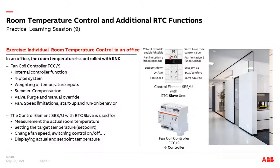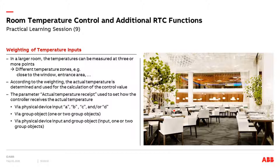We have built inside the room a fan coil unit which works in a four-pipe system, and we want to do these different additional functions: weighting of the room temperature, summer compensation, the valve purge, and the limitations. Regarding weighting of the temperature input — for example, we have different zones in an open-plan office or in a room. We can measure the temperature at different points and then weight this temperature for calculation of the set point. On the fan coil controller we can use the temperature which comes from the room temperature sensor via KNX, and also temperatures connected to the inputs of the device, then use the parameters for weighting.